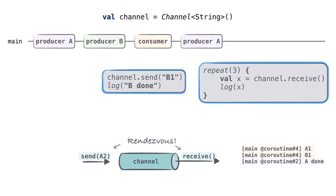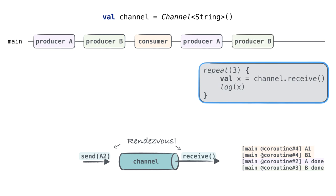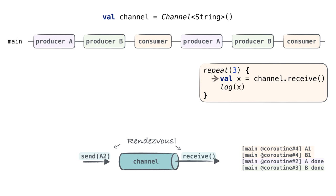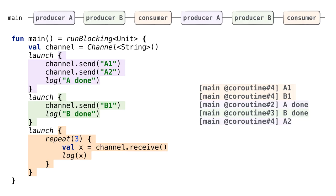The thread gets free. Both coroutines are ready to be resumed, but producer B was first, so it gets resumed first. It doesn't need to send anything — it just prints 'B done' and finishes its life. Lastly, the consumer coroutine is resumed. It finishes its execution, receives the A2 value, and prints it. We've finished discussing this example — you now understand why you see this output while running this code.